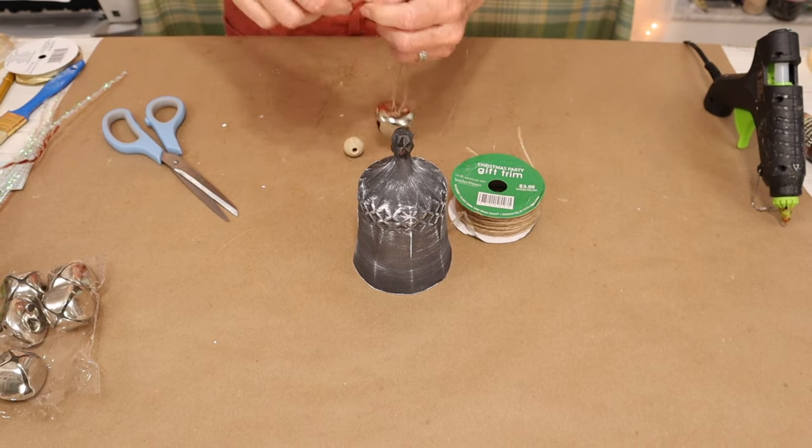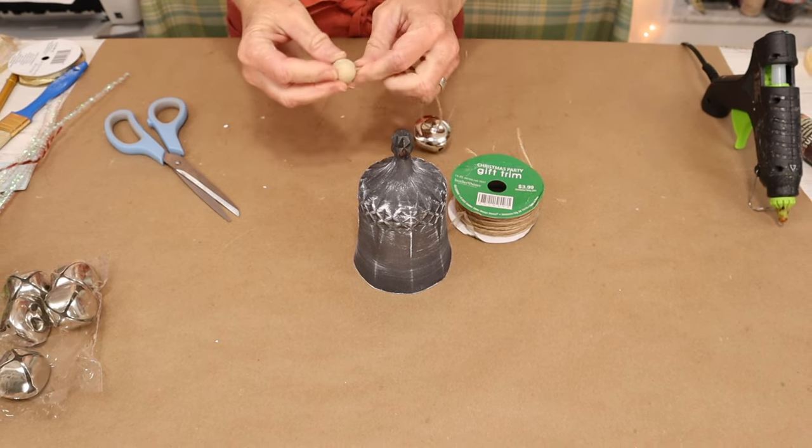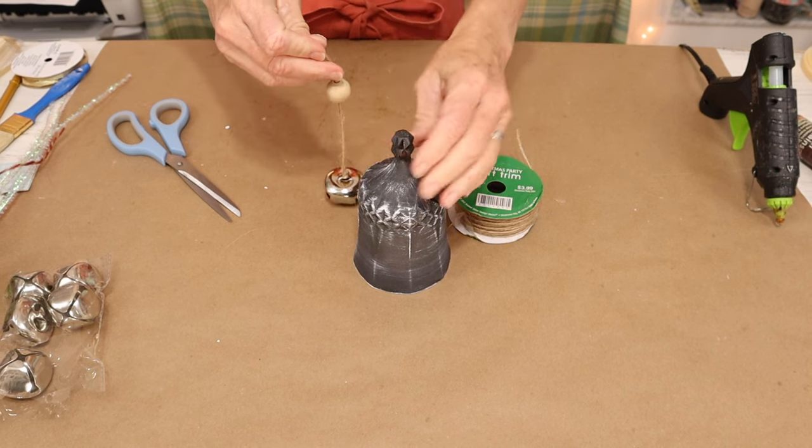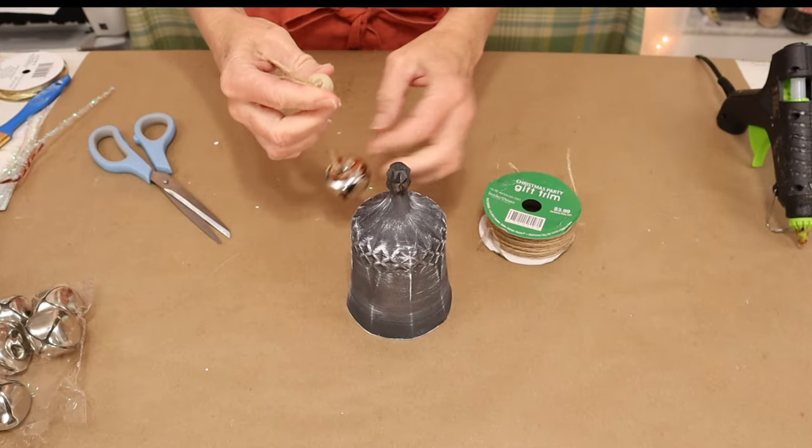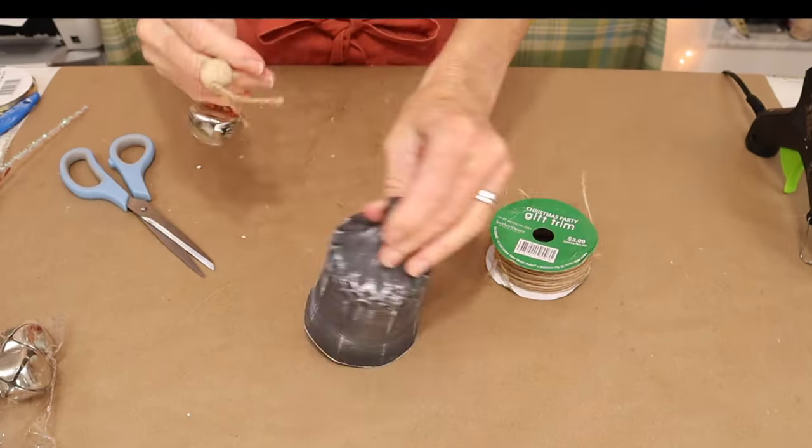Once we have our ends threaded up through our wooden bead, we're then going to measure the depth that we would like our jingle bell to sit inside of our wine glass. Then we're going to tie it in a knot at the top of our wooden bead.